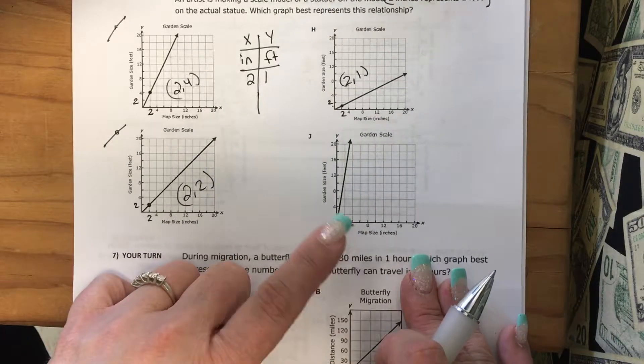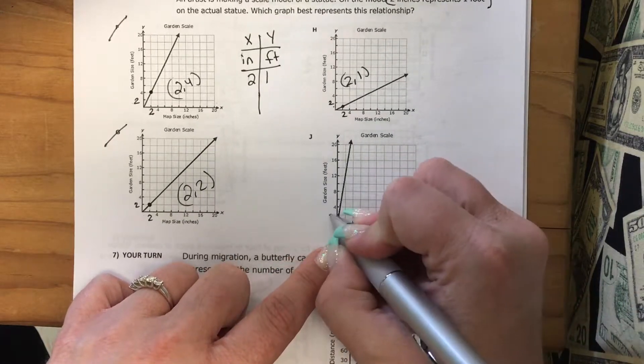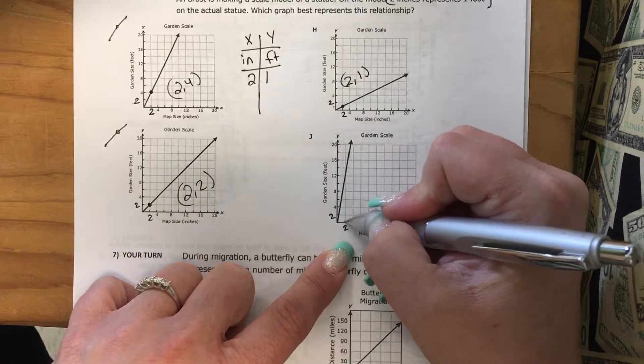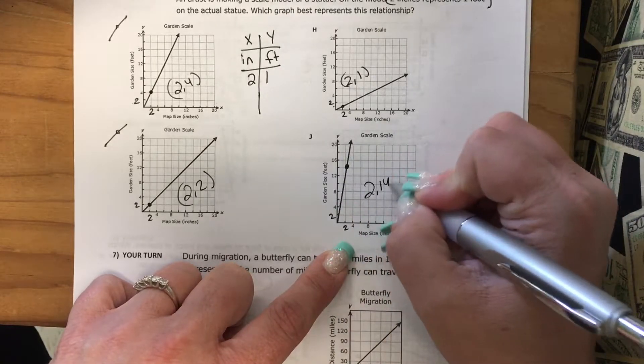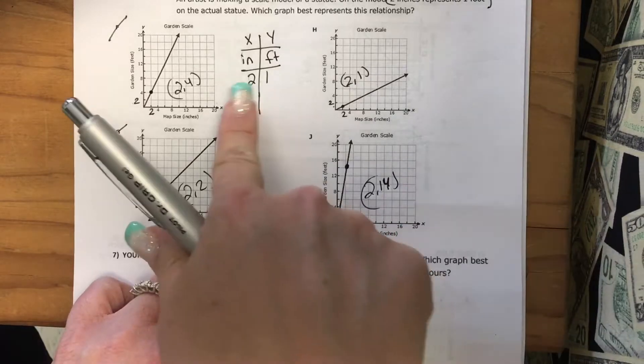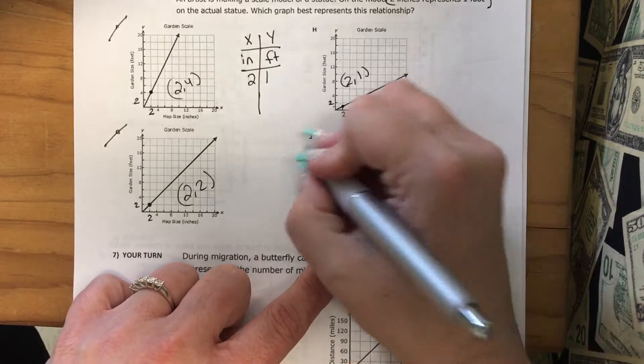Look at J. Here's my 2. Here's my 2. So when x is 2, I'm going all the way up to, looks like 14. So this is 2, 14. When it was 2, 14, the same thing as 2, 1? No. So it can't be J.